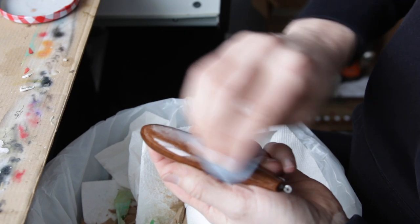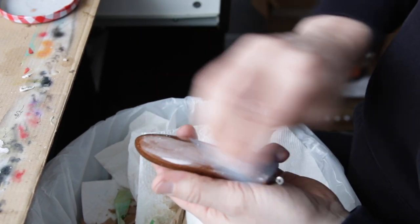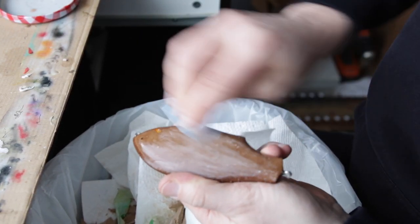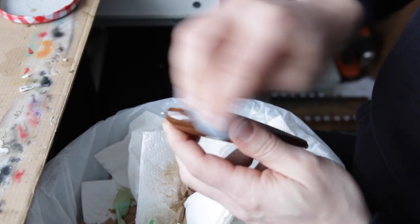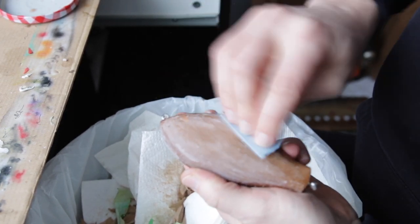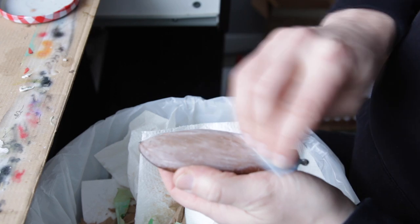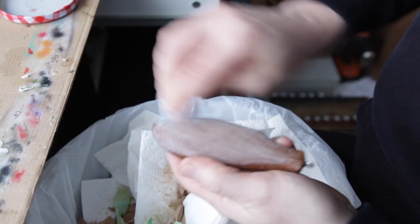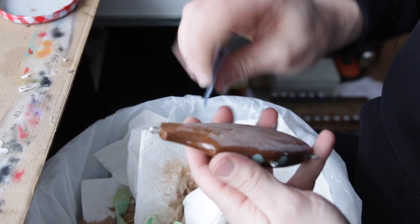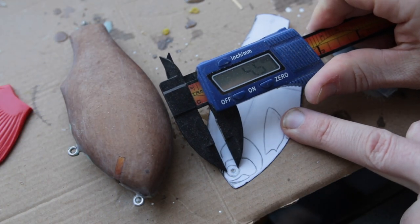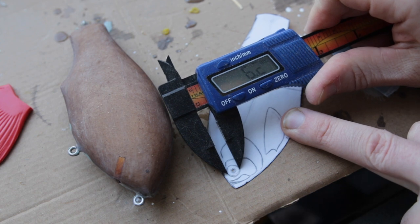Now the lure is completely encased in epoxy. I'm still going to scuff up the surface and make sure the primer will adhere to the surface properly. Next I'm going to drill the eye sockets for the lure, but before that I need to determine the size of the eye.